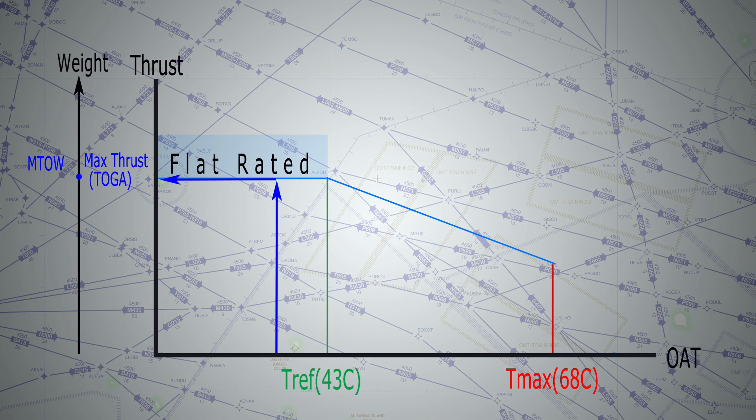Let's look at a different scenario now. If we were to operate in a temperature, say it's above T ref, so a high temperature will only give us this much thrust output. If we can only get this much thrust and not the maximum thrust, then it can only take off with this much weight and not the maximum takeoff weight.